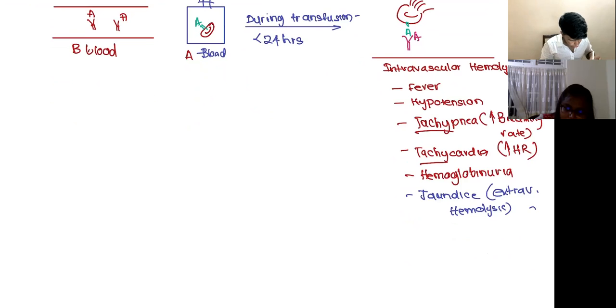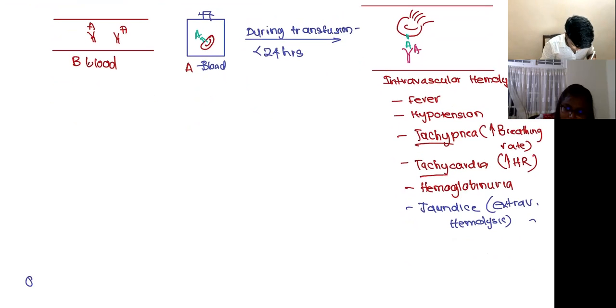So if you give the wrong type of blood the person will suddenly develop fever, low blood pressure, increased breathing rate, increased heart rate, and there will be hemoglobin in urine. That means the blood is going to appear red, and sometimes you can get jaundice if it is a severe reaction. The next one is febrile non-hemolytic transfusion reaction.